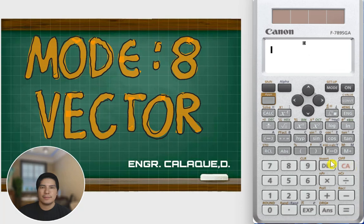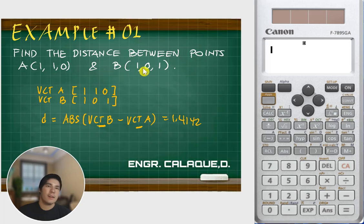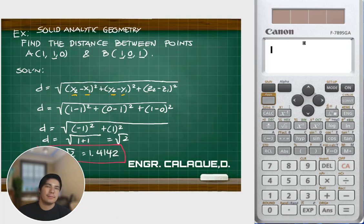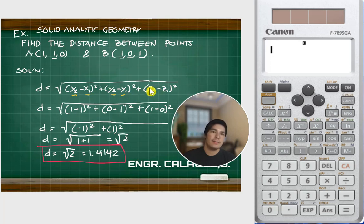Starting from scratch with this example: find the distance between points A(1, 1, 0) and B(1, 0, 1). Before we solve this using our calculator, let's solve it the conventional way using the distance formula — the square root of (x₂ - x₁)² + (y₂ - y₁)².